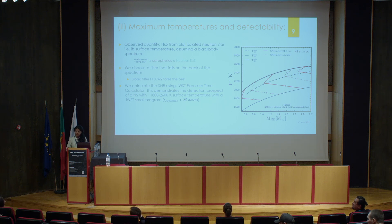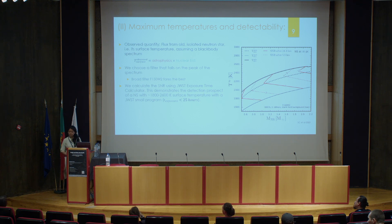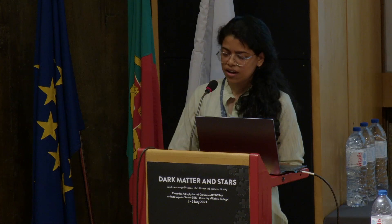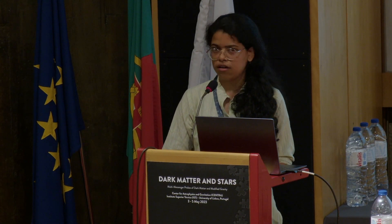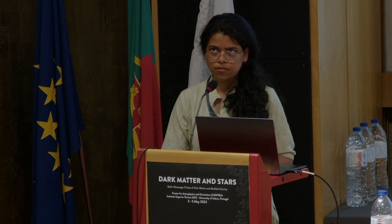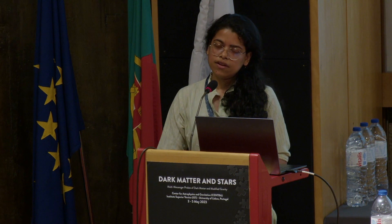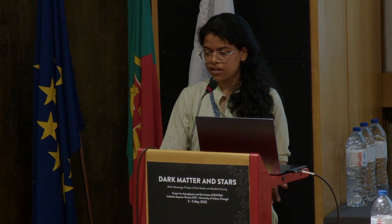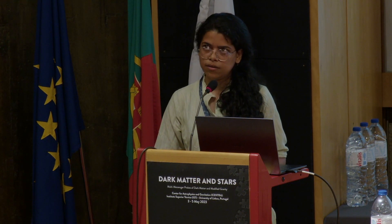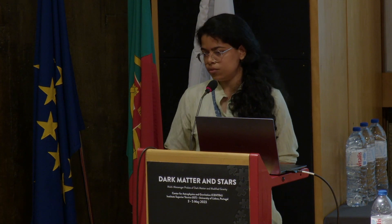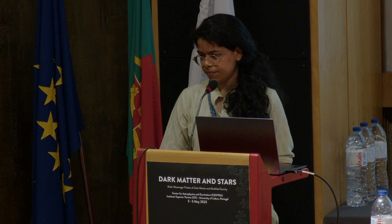Regarding whether the spectrum of the neutron star is truly thermal, or whether there are absorption effects or magnetic effects from the surface: we have assumed here that the spectrum is thermal with a black body spectrum. For very old neutron stars — giga-years and older, which is what one would want to look at — the magnetic field is expected to have decayed away. The assumption is that the amount of energy influx is equal to the outgoing black body flux.